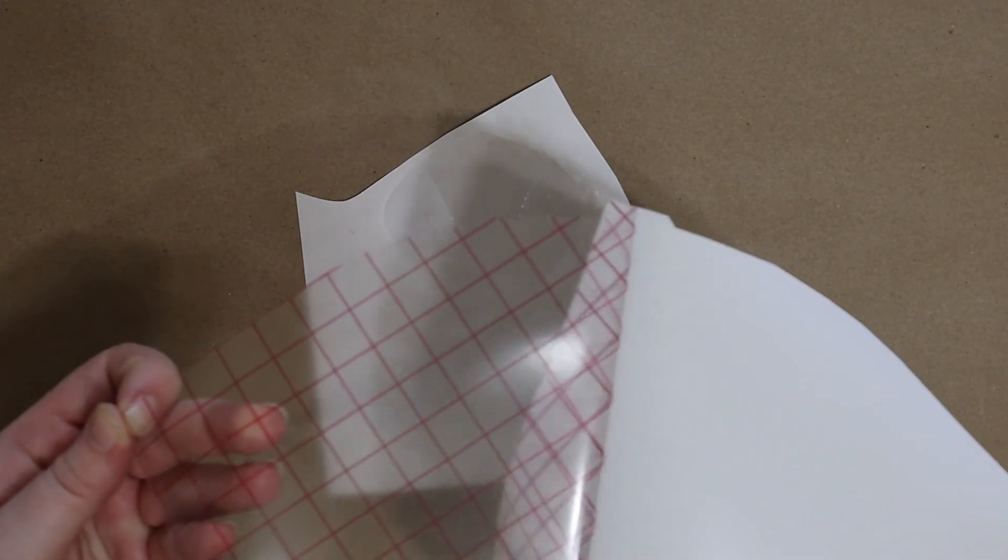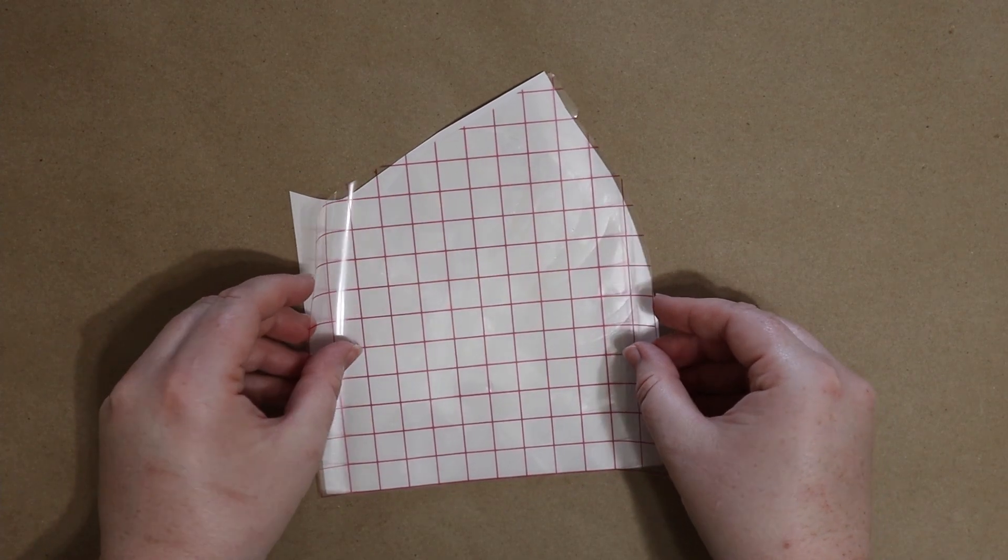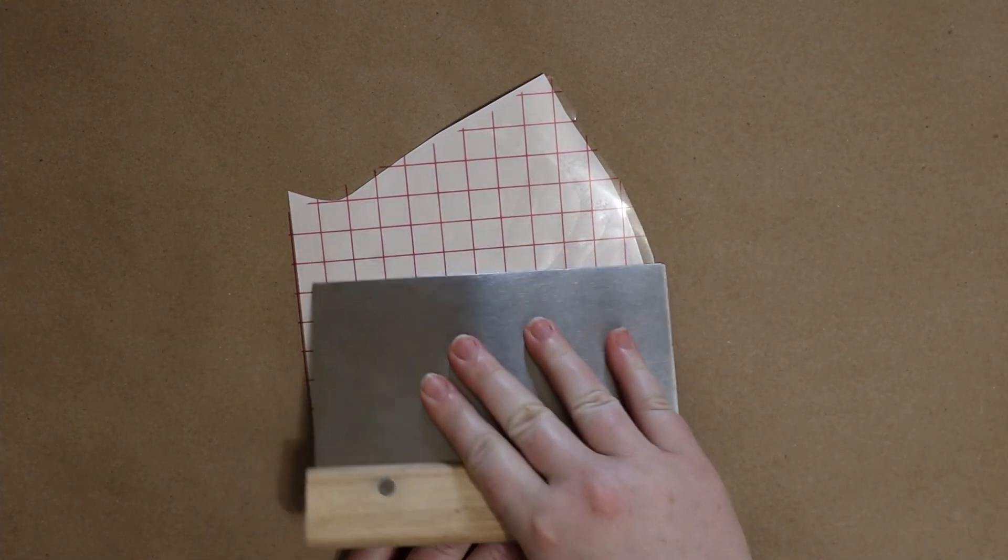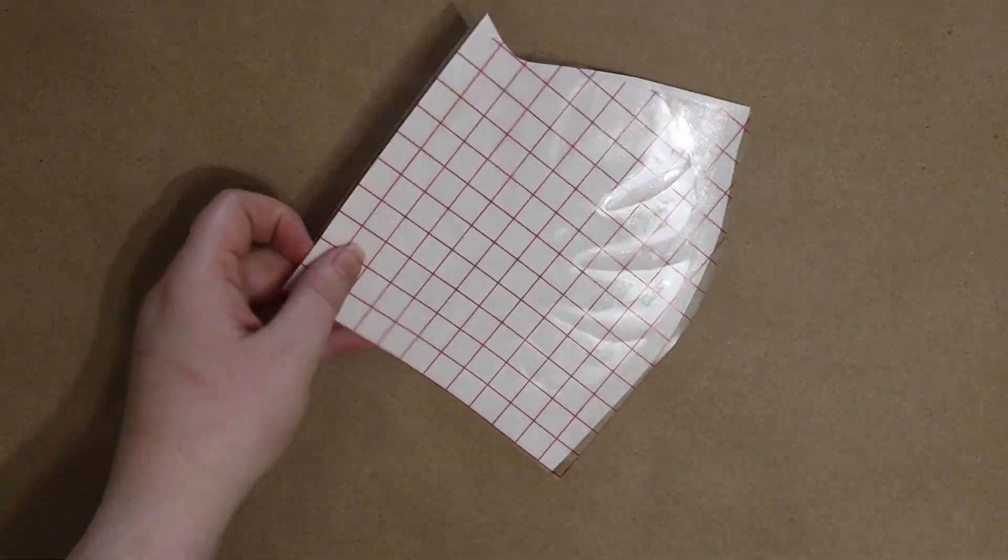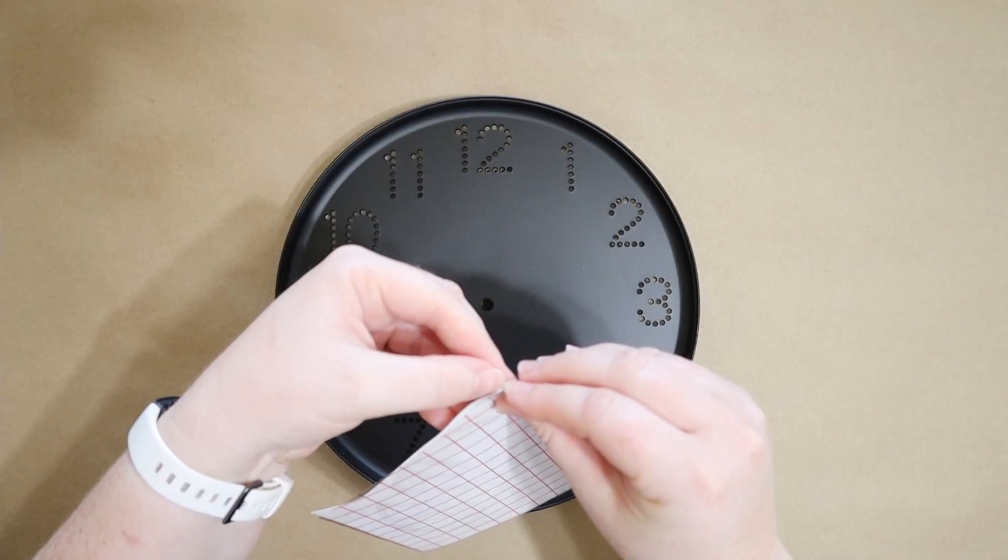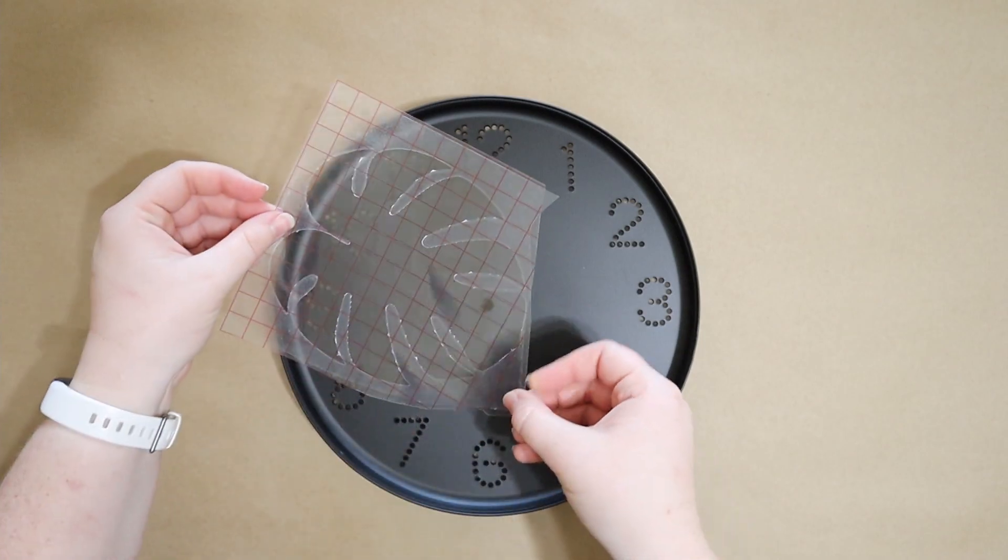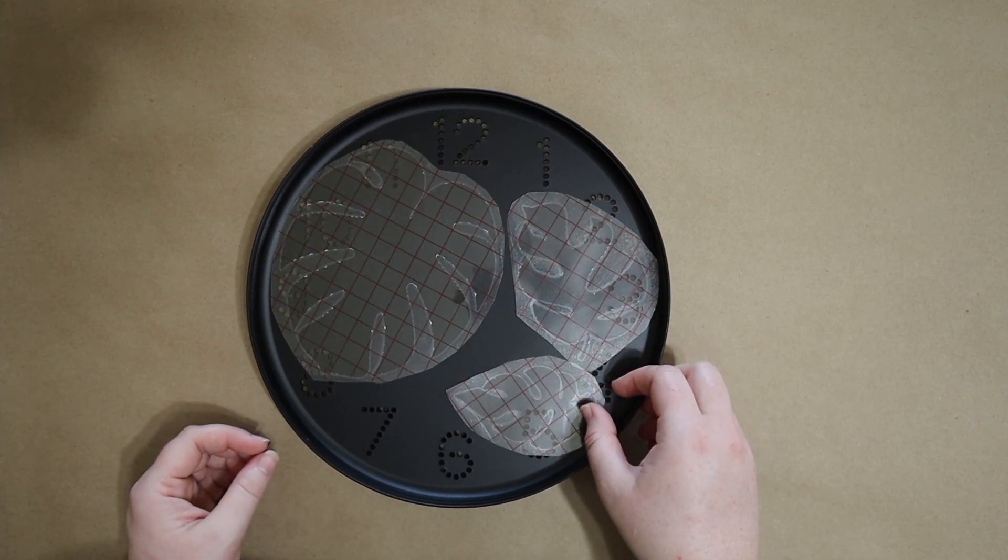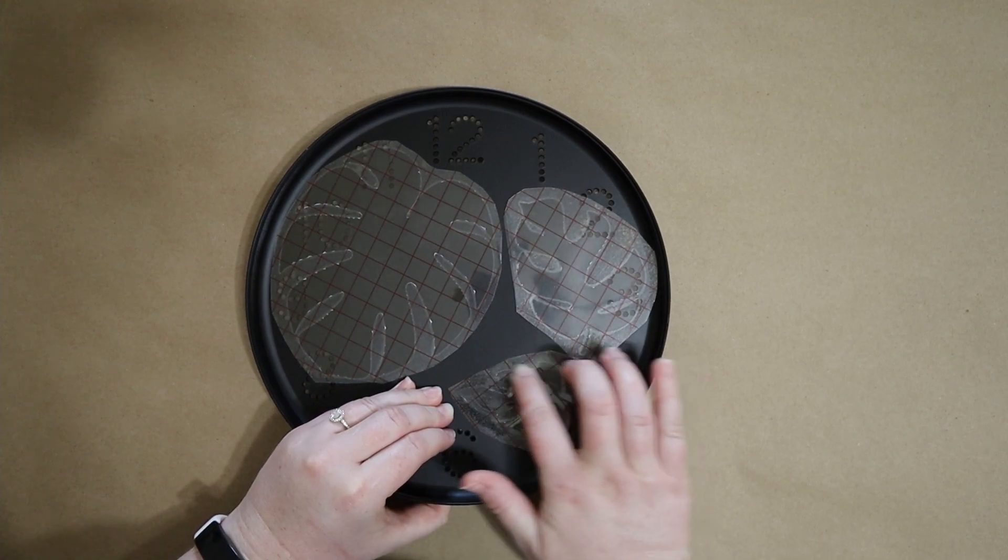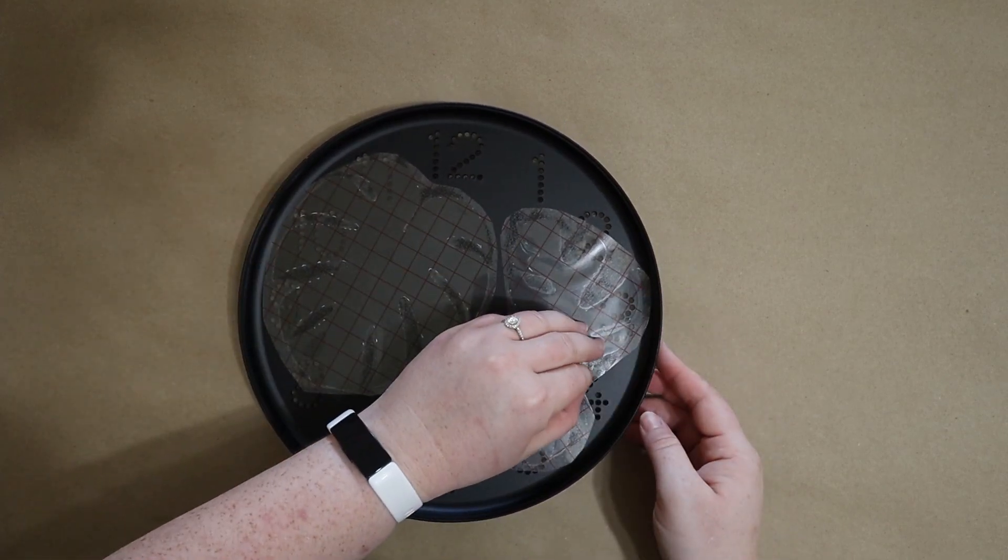Next I'm taking some transfer tape cut to the same size as each leaf stencil, peeling it off the backing and gently laying it down on top of the stencil. This part is really important because you have to make sure the transfer paper is very securely adhered, so I recommend taking something flat to really push it down. Now I'm peeling away that backing layer and setting out my leaves roughly following the design I originally had set up on my computer.